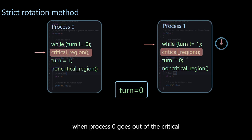Then when process 0 goes out of the critical area, it actively changes the lock to 1, so that process 1 can enter the critical section.